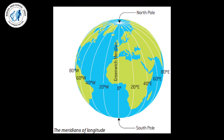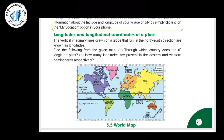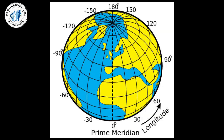Whichever places are near to or on that longitude, those are joined together via these longitudes. So these longitudes are measured in terms of degrees, minutes and seconds. Longitudes crisscross the latitudes at 90 degrees, forming the grid system which helps us to locate a place on the earth. They cross each other at 90 degrees and this way they form a grid.